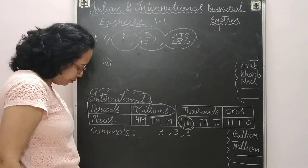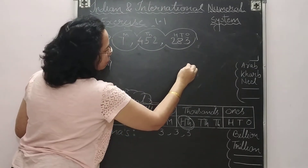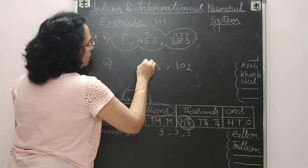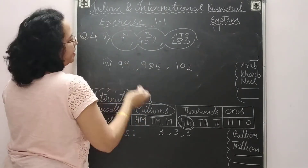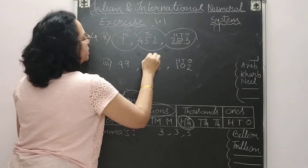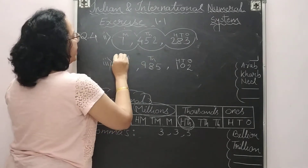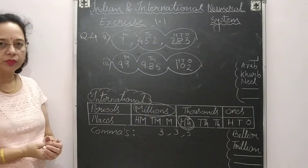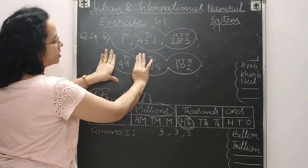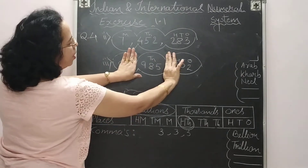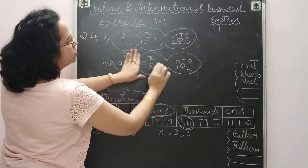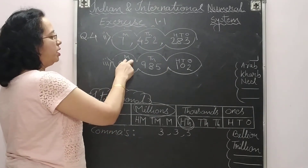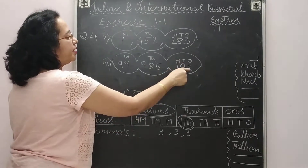Third example for international system — writing from the right hand side: 2, 0, 1 — comma — 5, 8, 9 — comma — 9, 9. Places: ones, tens, hundreds, thousands, millions. First circle is ninety-nine, so ninety-nine million. Middle circle: nine hundred eighty-five thousand. Last part: one hundred two. Final answer: ninety-nine million, nine hundred eighty-five thousand, one hundred two.